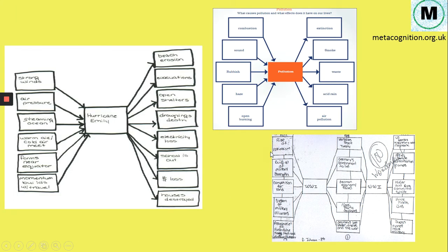So some examples here. On the left we can see Hurricane Emily, why did this happen, feeding into the event, and then the outcomes of the event. Same here with pollution, why does it happen, the event, what are the outcomes?